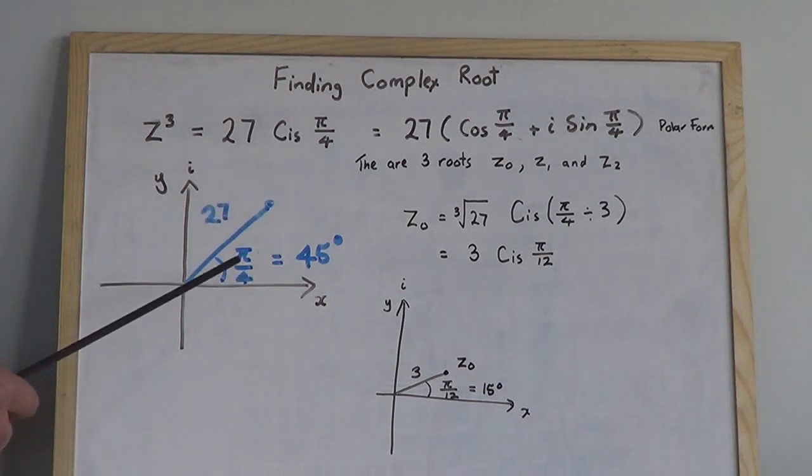Now it's 27 from the origin, and the angle it makes with the x-axis is π/4, which is 45 degrees.